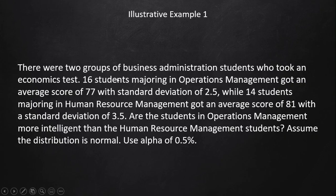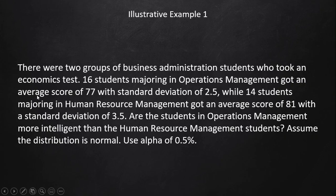For our first illustrative example, we have two groups of business administration students. Both groups took an economics test. Sixteen students from the operations management major got an average score of 77 and a standard deviation of 2.5. So n₁ = 16, x̄₁ = 77, and s₁ = 2.5.